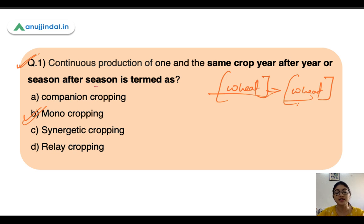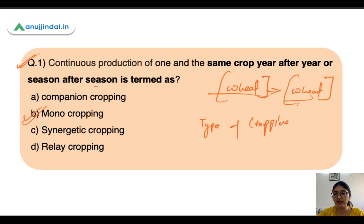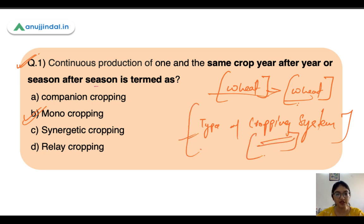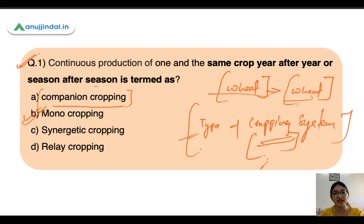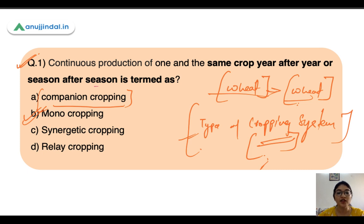This is an important area — types of cropping systems — from which you can get a question in your exam. You should know the definitions of all cropping system types. In companion cropping, you are growing two or more crops where there is no competition between them — no competition for nutrients or farming inputs. That type of cropping system is known as companion cropping.